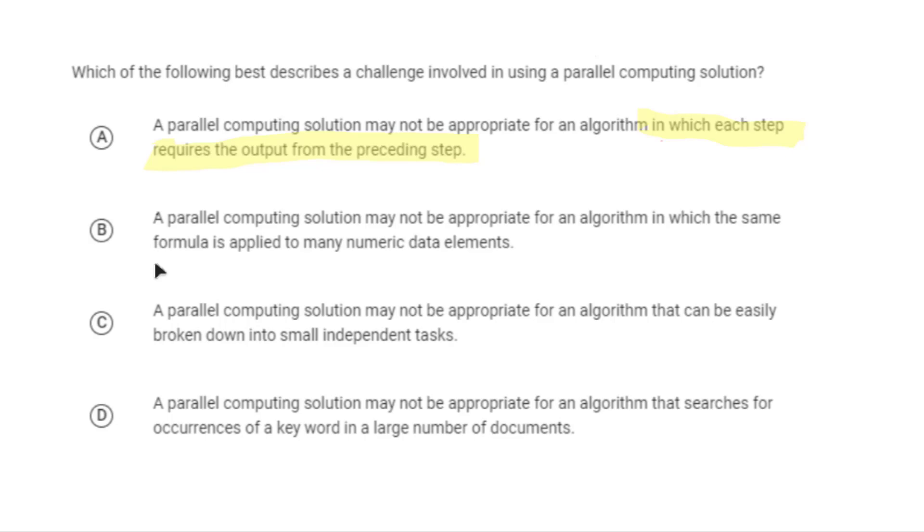Note, by the way, that all the other answers are describing some of the other requirements. So for example, the same formula is applied to many numeric data elements. If you're applying the same formula without requiring data from the other responses, then it's the same formula. That's something that you can split up. This one here, C, is talking about something which can be easily broken down into independent tasks. That's another property of a parallel algorithm. And finally, a parallel computing solution may not be appropriate for an algorithm that searches for occurrences of a keyword in a large number of documents. You could easily break that up. You could split up that document and look for that keyword. None of the answers to each of those individual problems requires a previous one. So that's a good example of something which can be broken down. Therefore, the answer to this is A.